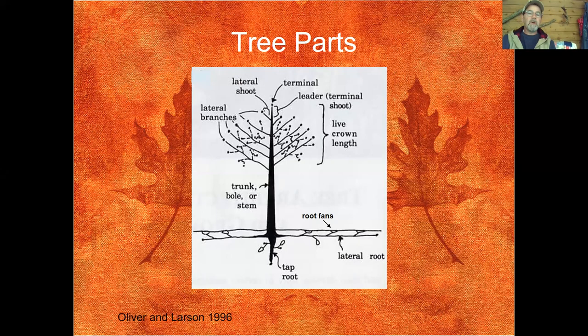I want to begin with some general concepts of tree parts. If we begin at the very top, you see the word 'terminal' — that's the lead branch, the tip top of a tree. Coming down the right side you'll see the words 'live crown length.' I like to think of that as live crown ratio — it's that portion of total tree height that has living branches on it. A healthier tree generally will have a higher live crown ratio.